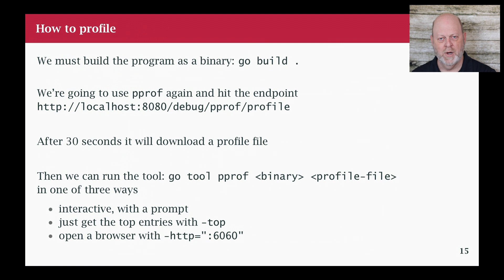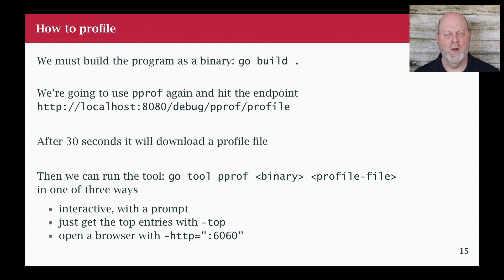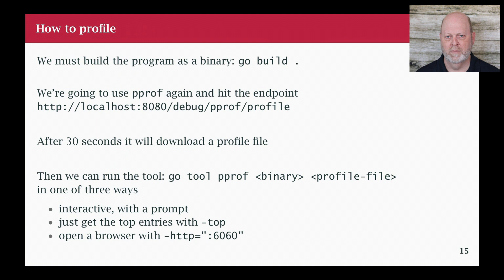To run it, we're going to hit the endpoint — I'm going to do it through the browser. You could also insert code in your program so when it runs it generates a profile. I'm going to use the profiler in the browser because we're seeing the animation there. When I hit the profile endpoint it's going to give me 30 seconds of data and drop it to a file on disk. To look at it we'll use go tool pprof. There are different ways — interactively, with the dash top option, or opening a browser to see a flame graph or call graph.